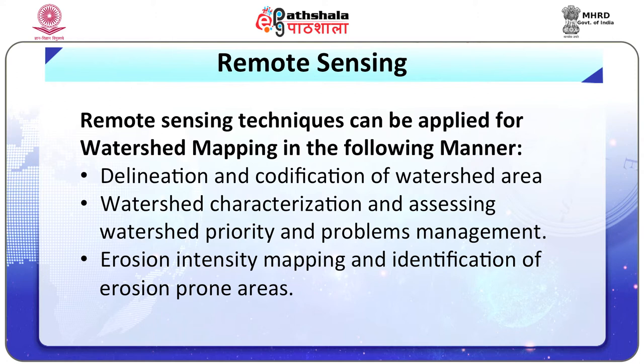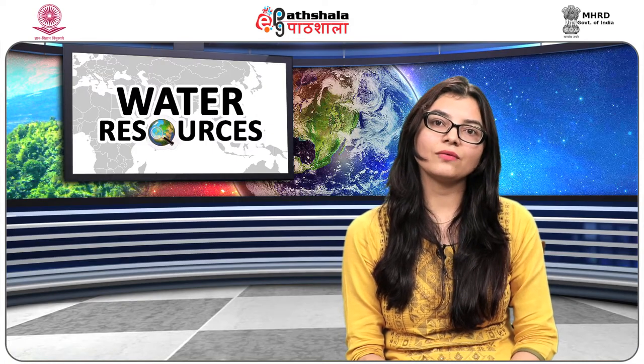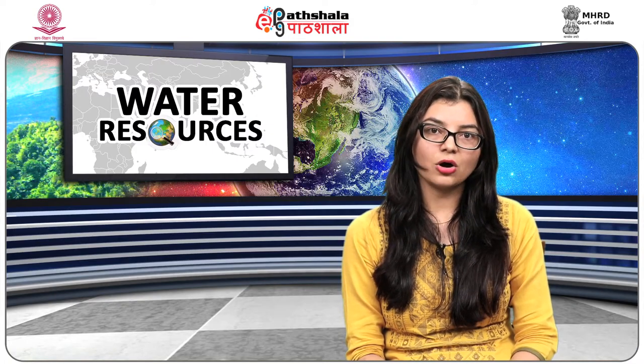Third, erosion intensity mapping and identification of erosion-prone areas. Fourth, soil, land use and land cover mapping. Fifth, drainage pattern mapping. Sixth, evolving water conservation strategies in a watershed — including selection of sites for the construction of check dams and reservoirs on streams, suggesting sites for rainwater harvesting structures, and evaluation and monitoring of the impacts of treatment.